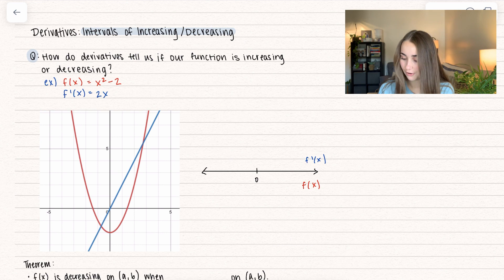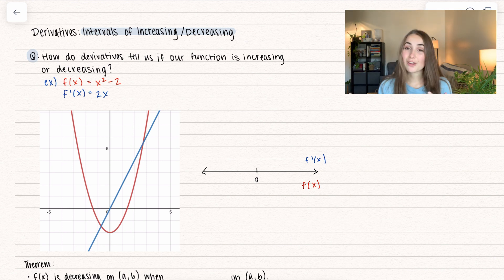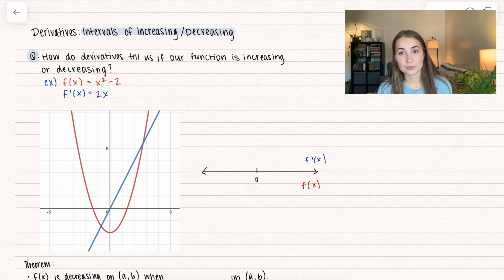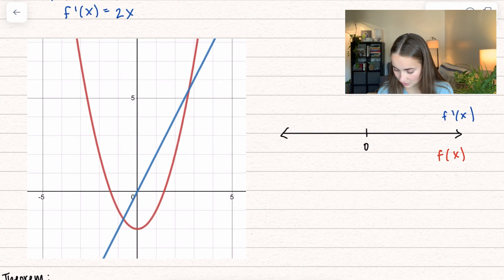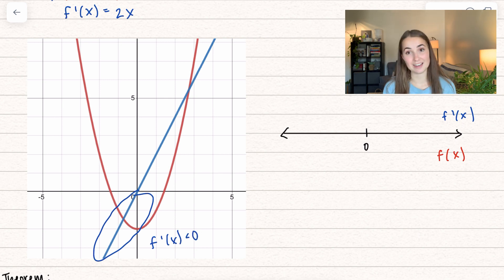So how do derivatives tell us if our function is increasing or decreasing? We have an example here — the function x squared minus 2, along with its derivative 2x. I also have them graphed right here: in red is the original function and in blue is the derivative. We're going to look at the derivative and what that tells us about the function. Let me zoom into this image and look at where the function is negative and where it's positive. In this area, the derivative f prime of x is less than 0, meaning it's negative.